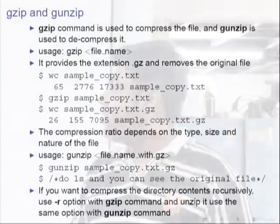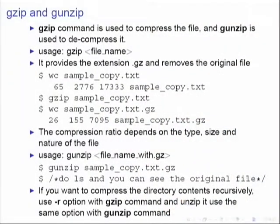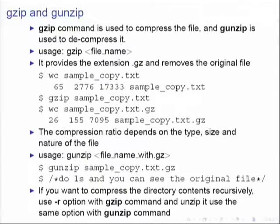The compression ratio you get may not be the same across all files. Here you had 65 lines and after compressing got 26 lines. This ratio depends on many things like the type of file, size of the file, and the nature of the file — for example, whether it is an ASCII file. Here we used an ASCII file to compress it.